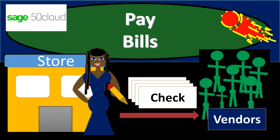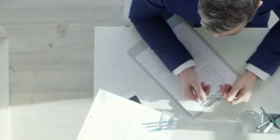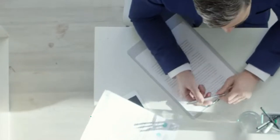In this presentation we will enter a pay bills form. In the past we've entered bills increasing accounts payable. This time we're going to be entering the payment of the bills, decreasing accounts payable and decreasing the cash account. It's time to engage with Sage 50 Cloud Accounting.